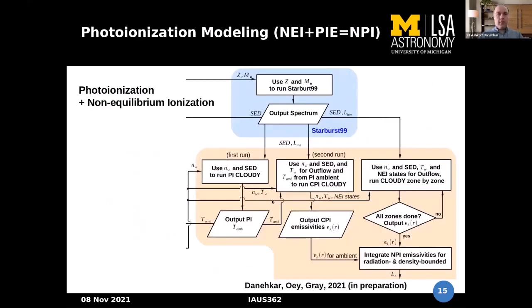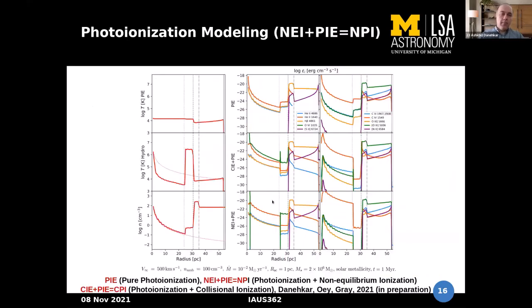In the next step, I incorporated both temperature and density and also non-equilibrium ionization states calculated by our hydrodynamic simulation with FLASH. The emissivity is shown in the bottom panel as NEI plus PI, and in the middle panel as collisional ionization plus photo-ionization, illustrating the difference between non-equilibrium photo-ionization and non-equilibrium photo-ionization plus collisional ionization.